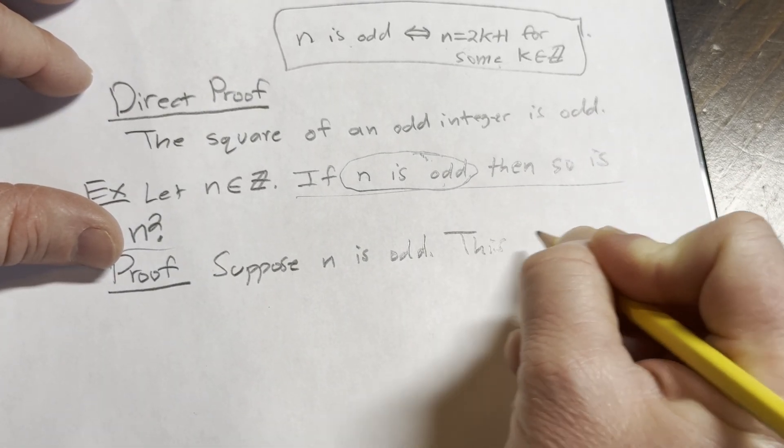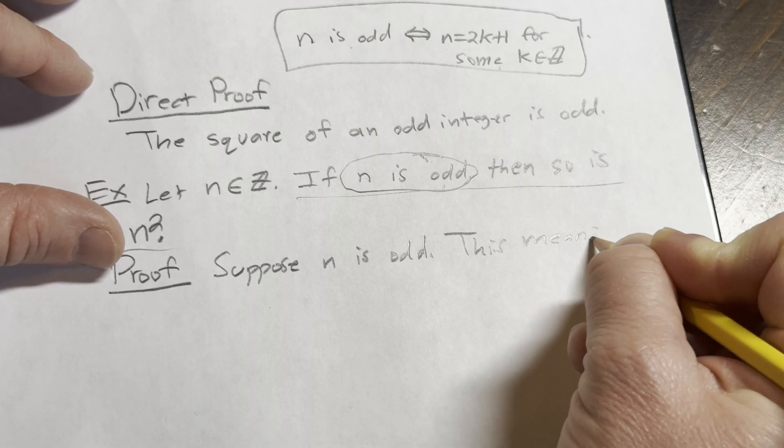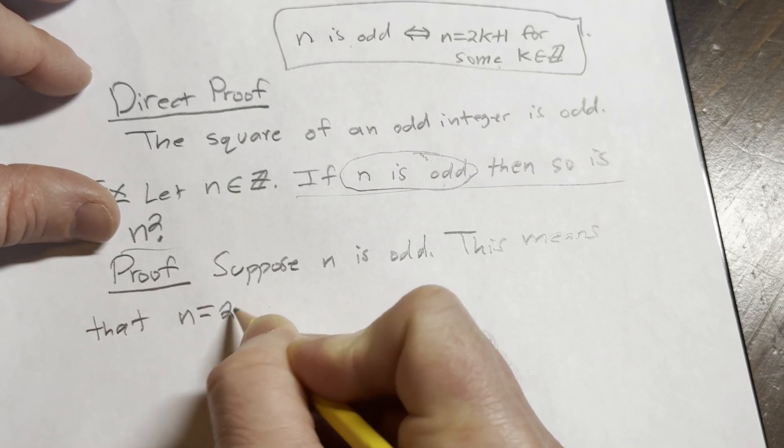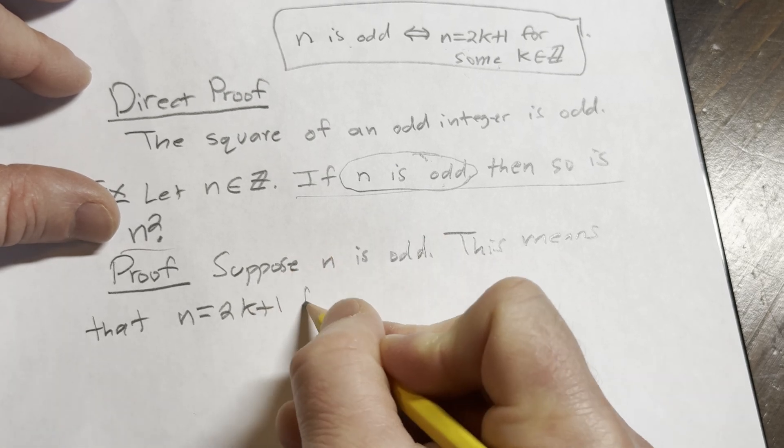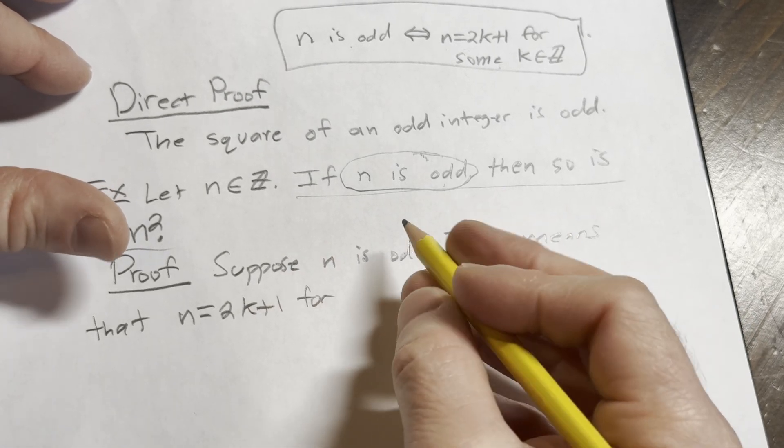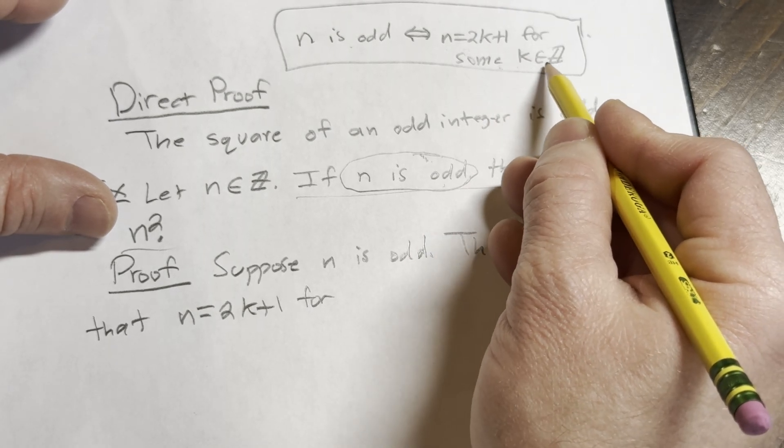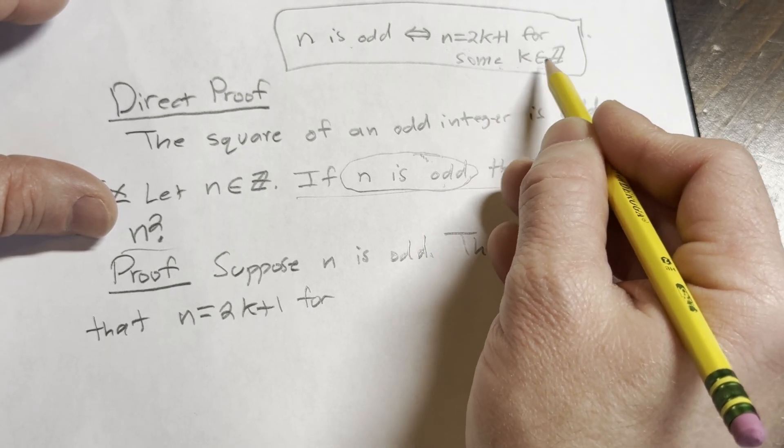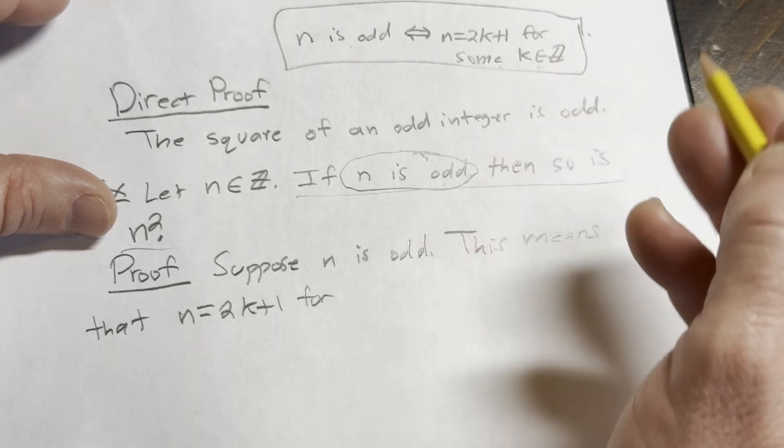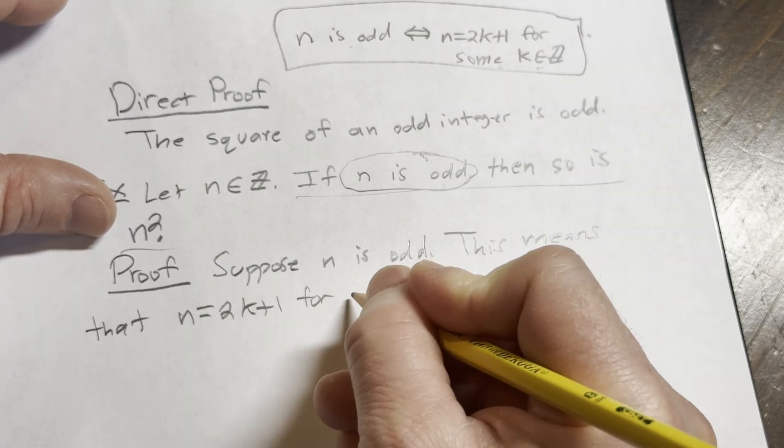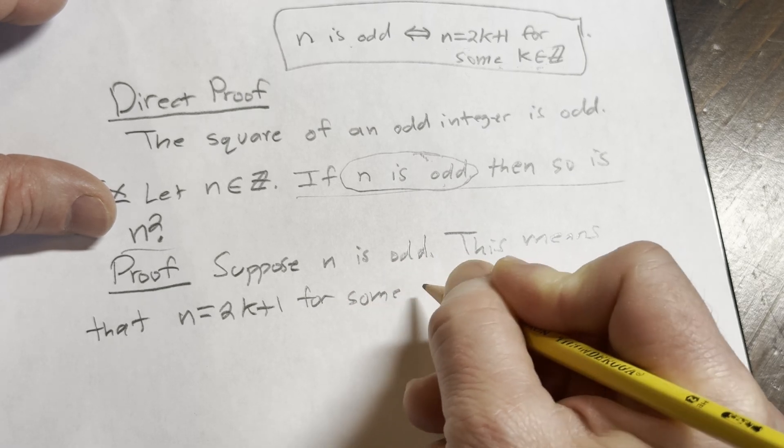So this means, let's be really precise. This means that n is equal to 2k plus 1 for some integer k. So I could say for some integer k or I could say for some k in Z. This is the same thing as saying for some integer k. So if you don't like this notation, you can say for some integer k. I'm going to continue with this notation though. So for some k in Z.